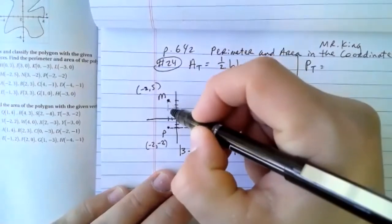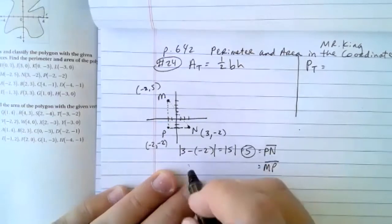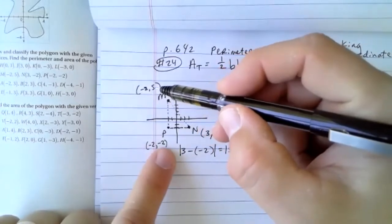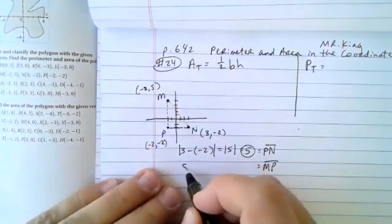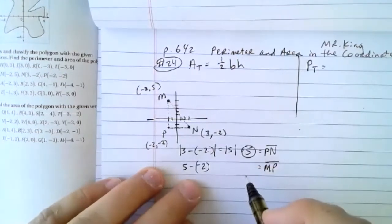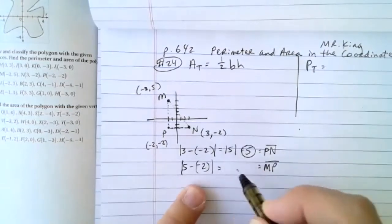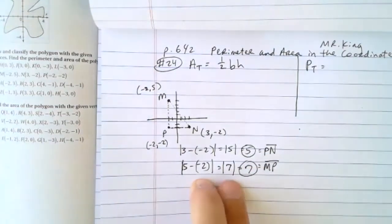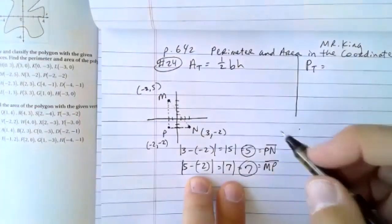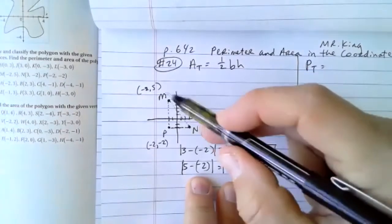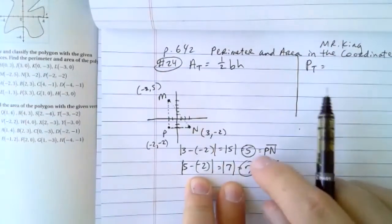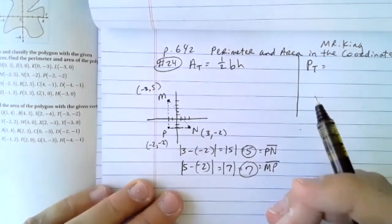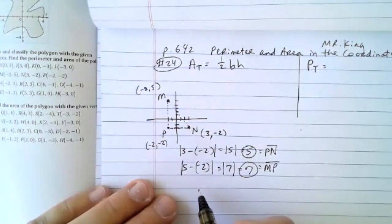Line segment MP is figured out the same way. This time the X value is the same and the Y value is different. We subtract the two Y values and take the absolute value. That gives us seven for the length of MP. For the third side MN, we need to do something special — we can use the Pythagorean theorem since this is a right triangle.